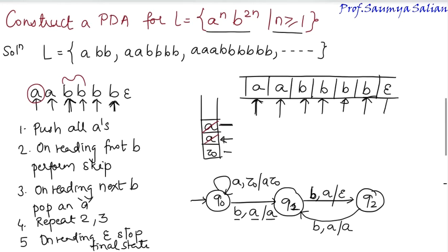Now when my read header is reading epsilon and my stacked top is in Z naught, there are no more string symbols to parse, so I will perform skip operation and reach final state Q3. Complete your answer by defining the seven tuples and giving an example for valid and invalid state.